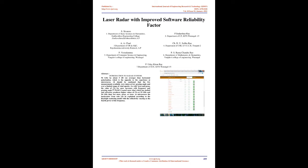It should be cautioned that the few measurements available were taken at low grazing angle and over a limited range of wind speeds. As with trees and grass, the value of sigma-zero for snow increases with frequency and grazing angle. Crusted snow, that which has melted and refrozen, produces higher values at 35 GHz and 94 GHz than wet snow, grass, or trees.